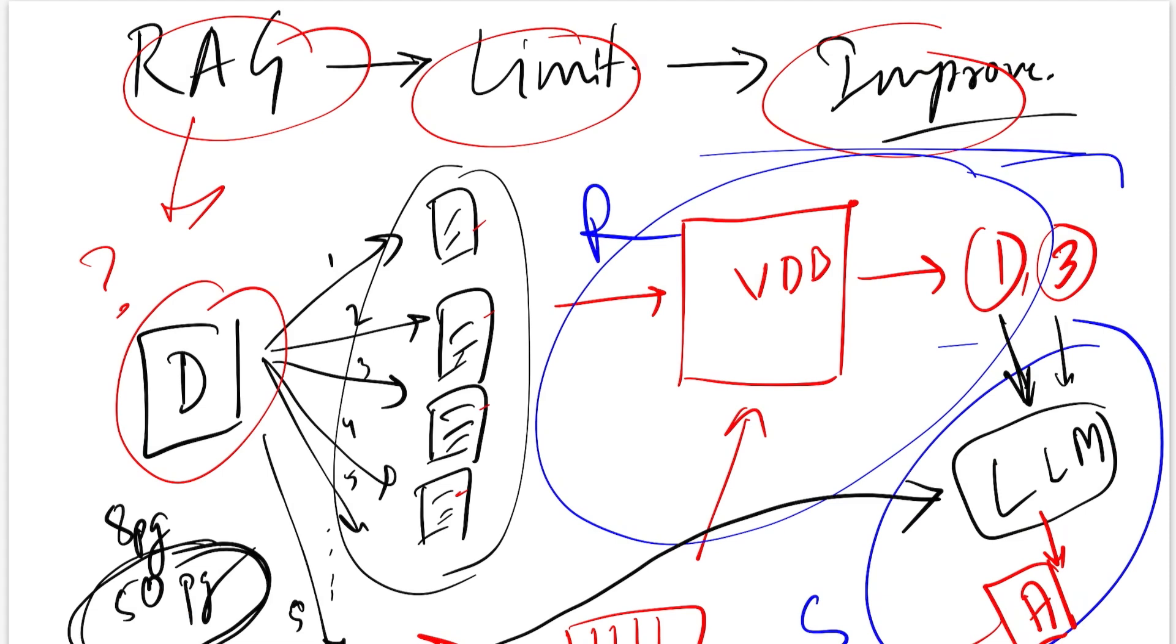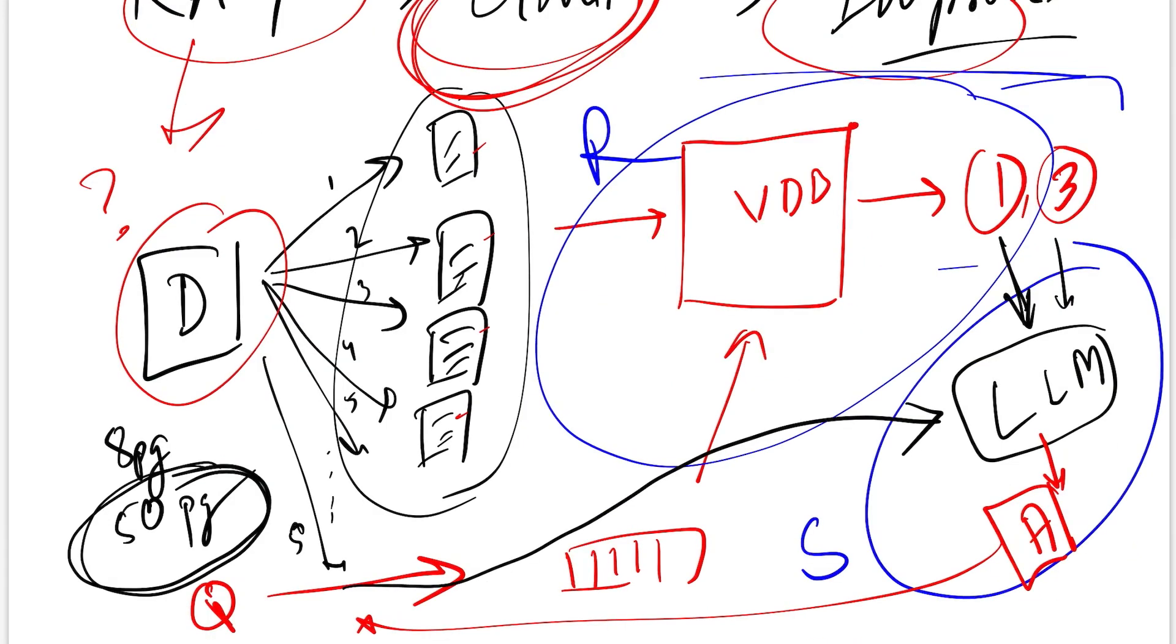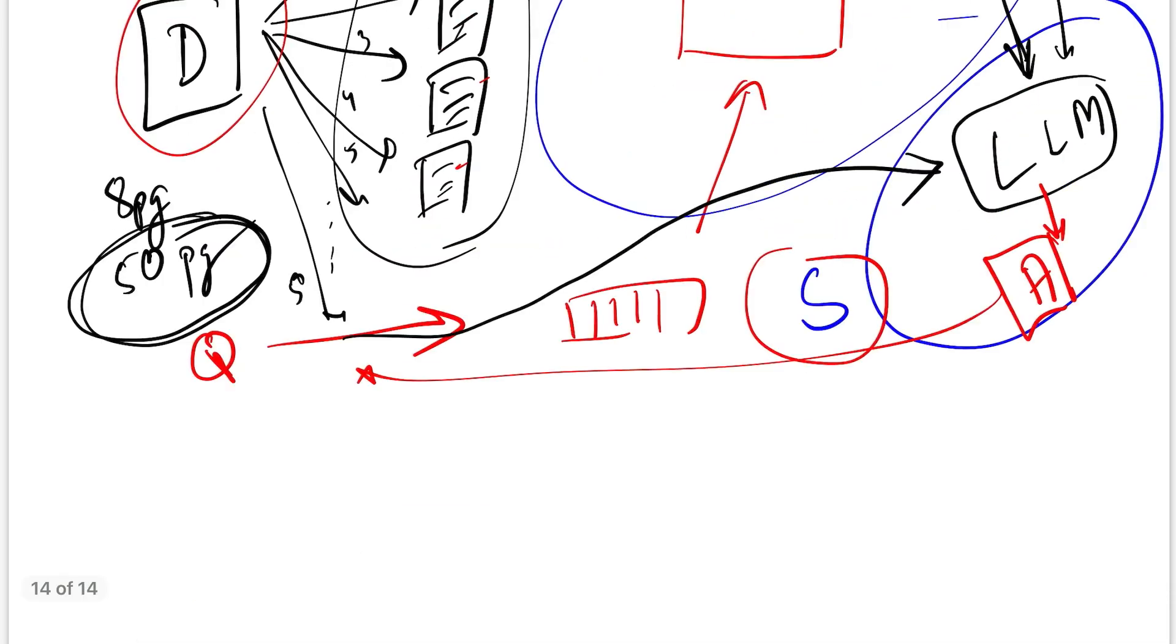What this entire system more or less tells is that the answer that you're going to generate will be from your document. That's not a guarantee, but this is how a typical RAG system looks like. Let's move forward and see the second aspect, which is the limitations.